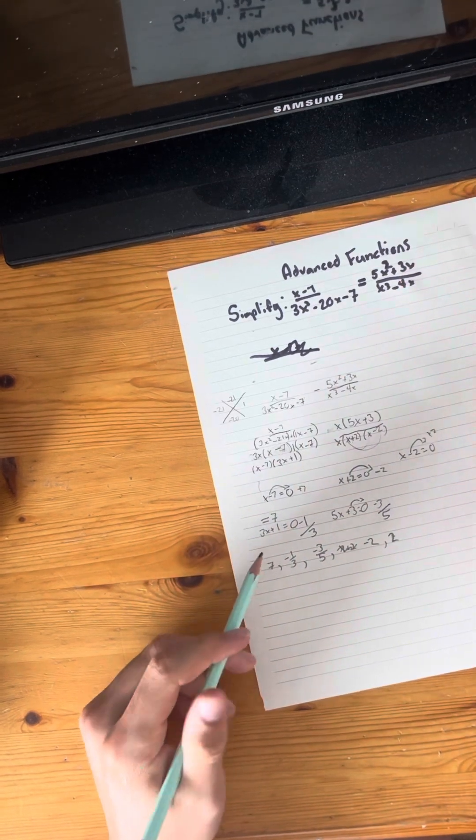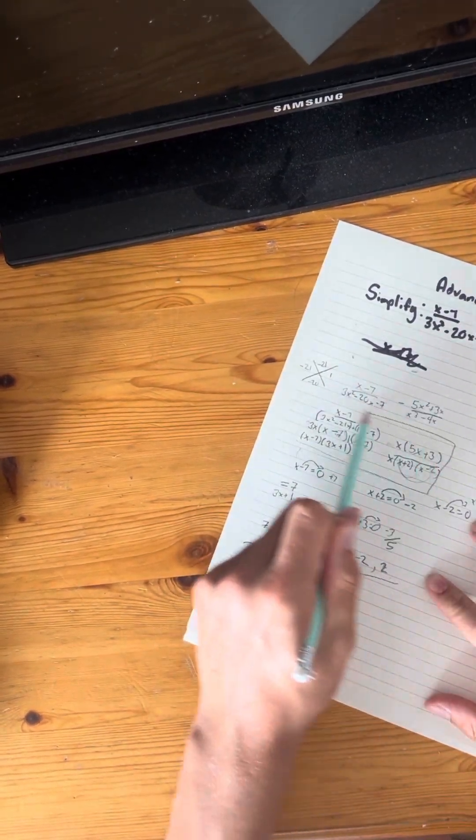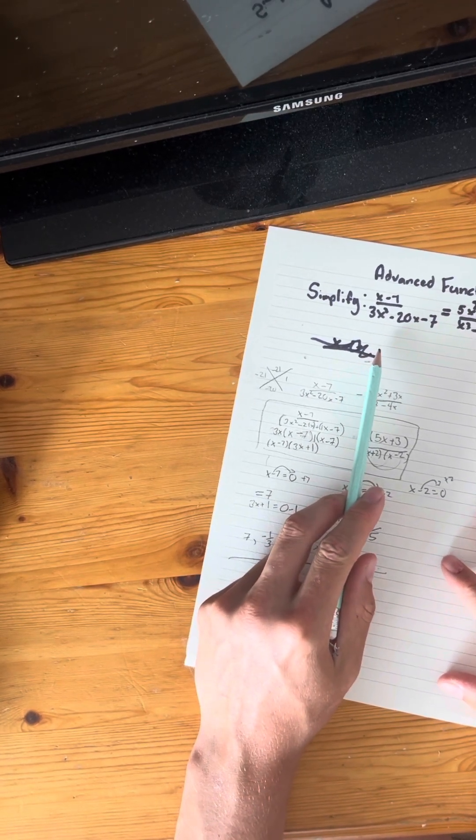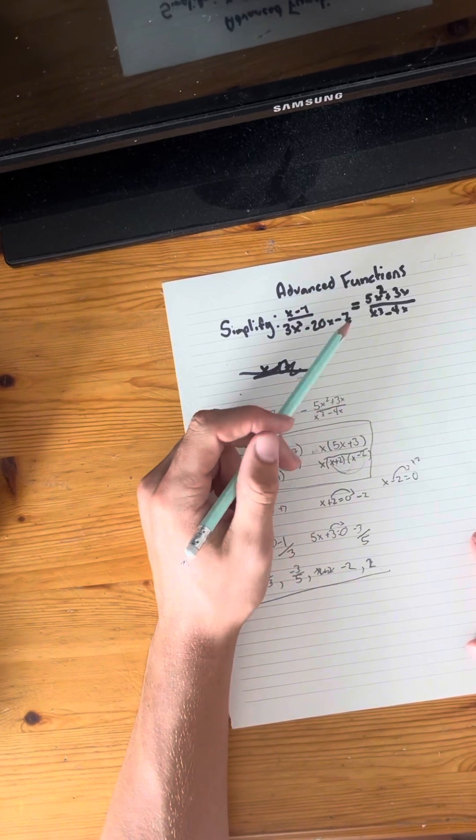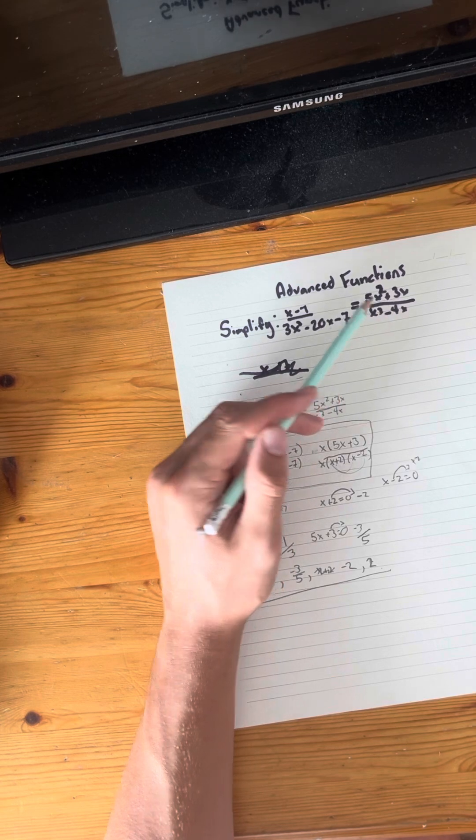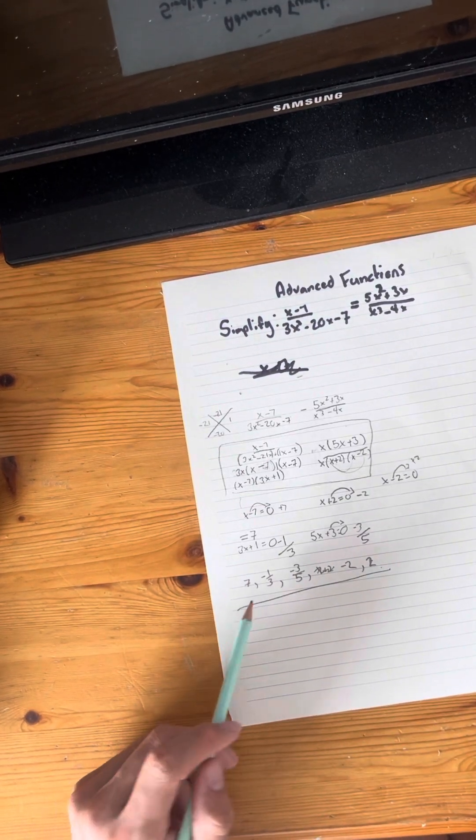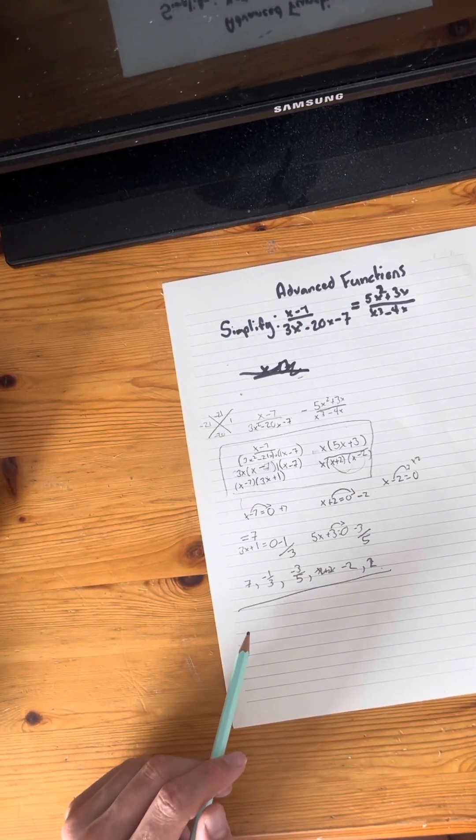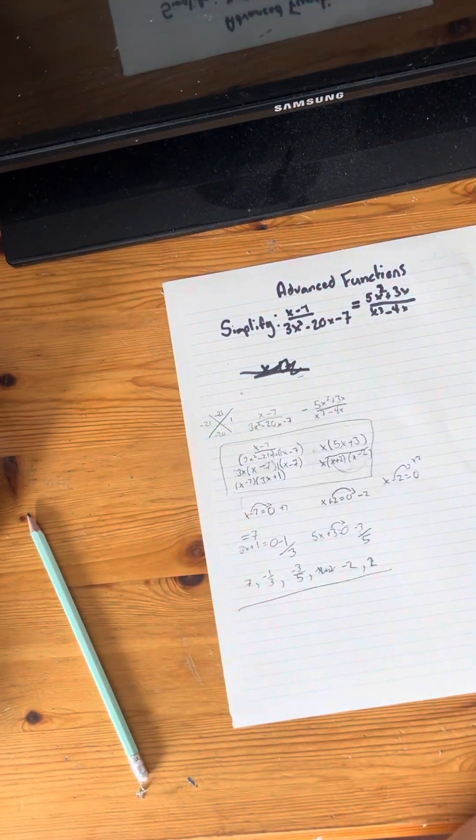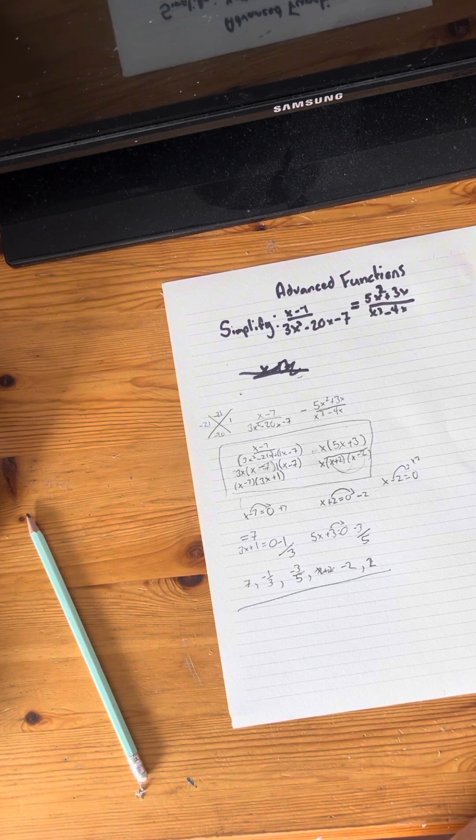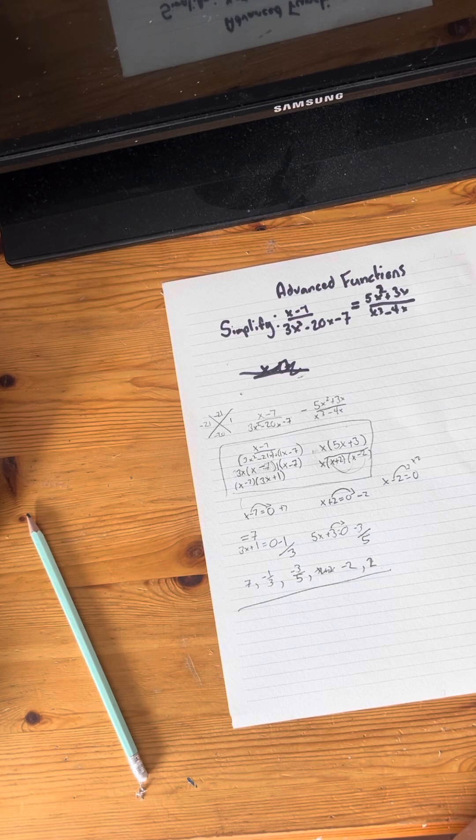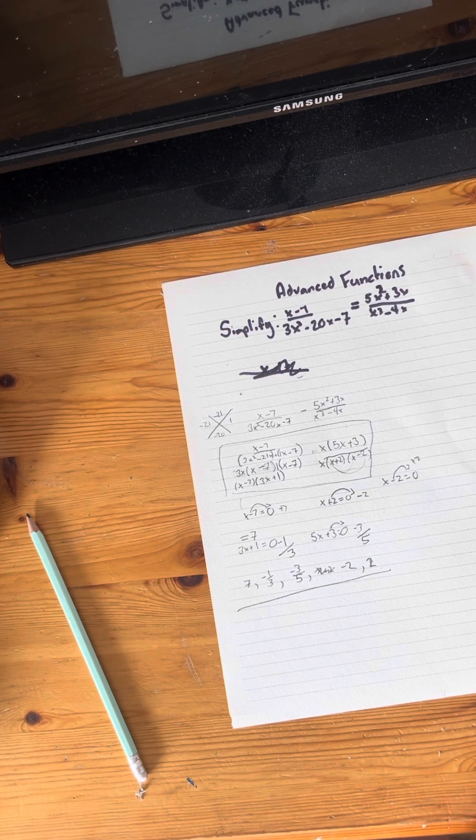So there you have it, the simplified version of x take away seven over 3x squared take away 20x take away seven, and then 5x squared plus 3x over x cubed take away 4x. So your zeros are seven, negative one over three, negative three over five, negative two, and two. So in conclusion, we have simplified all this with the restrictions. Thanks for watching. I hope this video helped you understand how to simplify rational expressions and determine restrictions. See you next time.